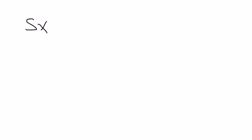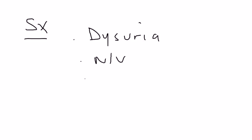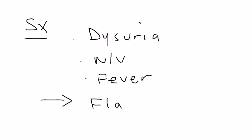Now let's get into the symptoms. There are some urinary symptoms like dysuria, but there's also nausea, vomiting, and fever — these are kind of nonspecific. There are so many medical conditions that can present this way, but fortunately there are some very specific ones, and almost universal is flank pain.